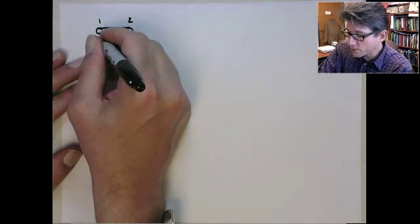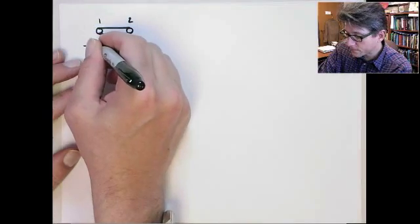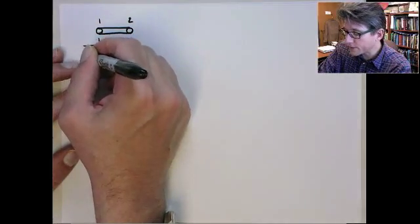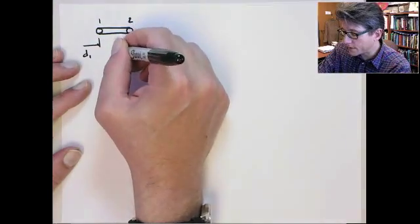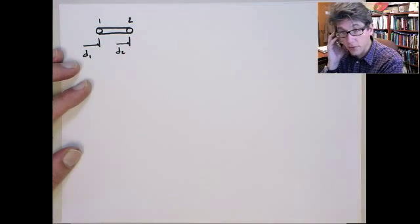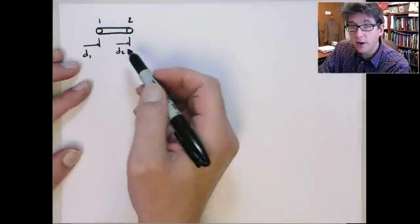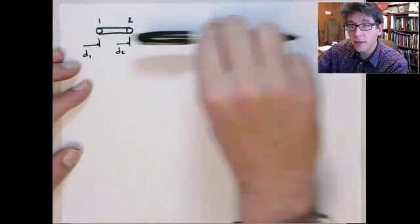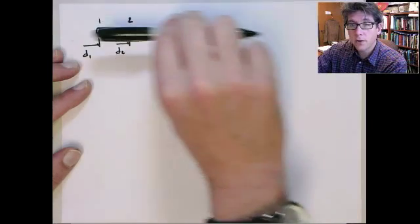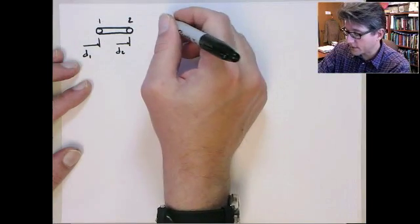At each node, we can have a displacement d1 and d2 for nodes 1 and 2 respectively. So it allows for this element to move in any arbitrary manner, but only along the x line. So we'll call this the x direction.